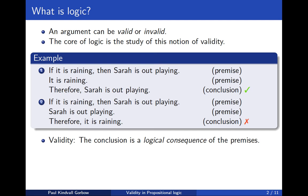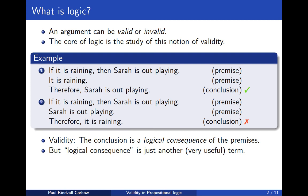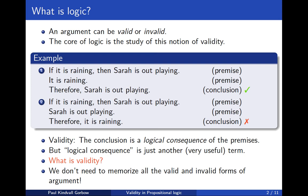Validity can also express that the conclusion is a logical consequence of the premises. So this introduces the notion of logical consequence as just another useful term, which is essentially synonymous with validity. But the core question remains: what is validity? The point of approaching this question is that we don't want to have to memorize all of the valid or invalid forms of argument. If we instead know what validity is, then we can simply check for any argument whether it is valid or invalid.